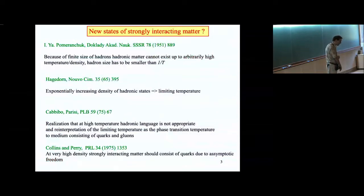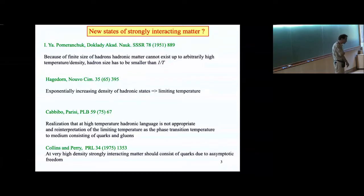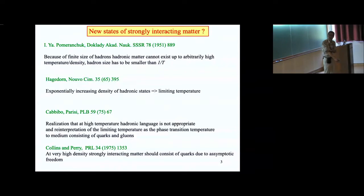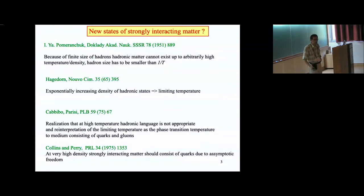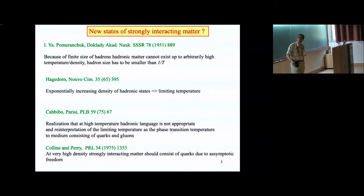To understand the entire problem, it's worth going back in the past. This area of research didn't start in the 80s or 90s — it started much earlier, essentially as soon as hadrons were discovered. Right in the 50s, it was pointed out by Pomeranchuk that hadronic matter cannot exist at very high temperature, because already then we knew that hadrons, in particular the proton, have a finite size. If you try to heat up the matter, it will produce more and more hadrons, and eventually, because of their finite size, these hadrons will start overlapping.